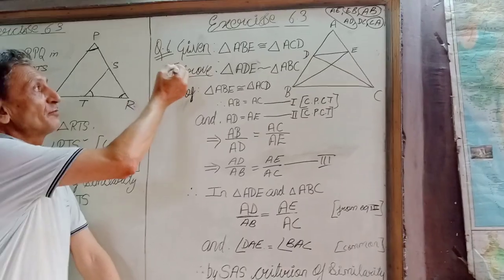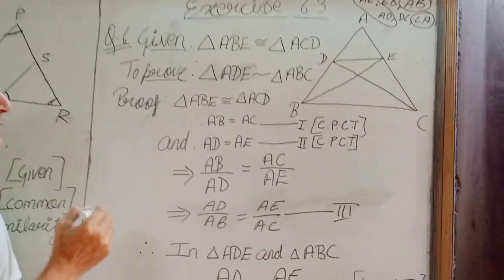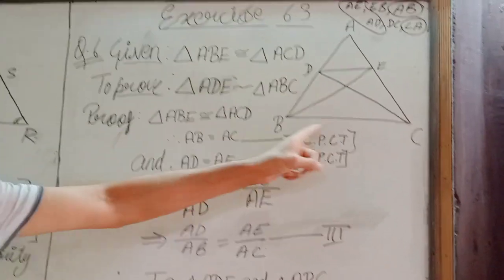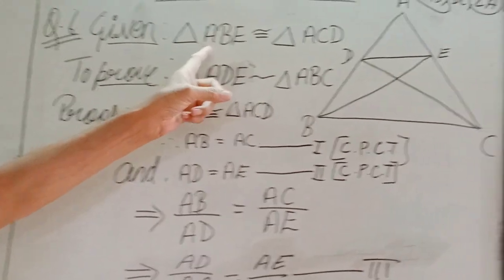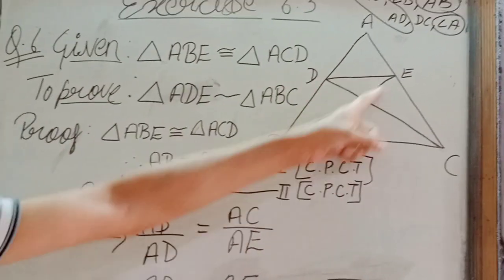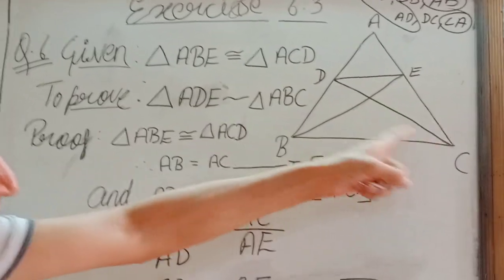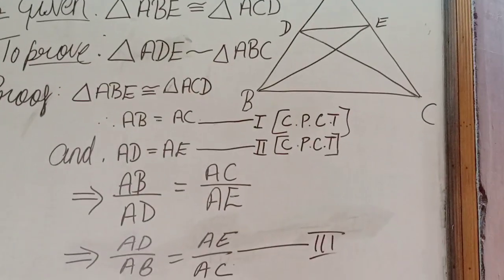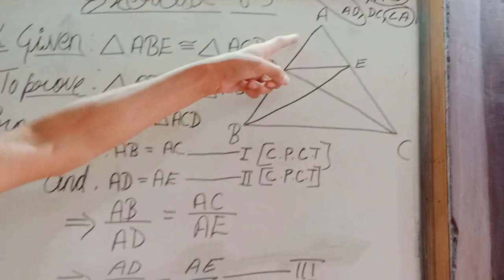We have taken up question number 6 of your NCERT exercise 6.3. We are given this figure and in the figure we are already given that triangle ABE is congruent to triangle ACD. We have to prove that triangle ADE is similar to triangle ABC.